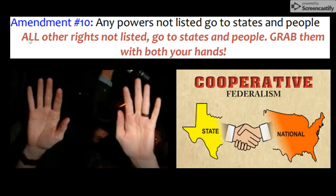Finally, the Tenth Amendment is the best representation of the constitutional principle of federalism. You put all ten fingers in the air and raise up your hands, because any power not reserved by the federal government is allowed to be taken by the states. For example, states have the right to make laws about speed limits on their highways — that right was not taken by the national government, so the states can grab that up.